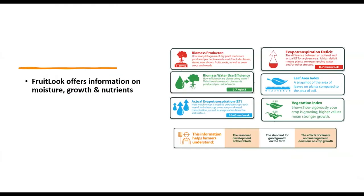Today we will be looking at the ETLOOK algorithm behind the FruitLOOK data. FruitLOOK offers users information on moisture, growth and nutrients. This information is an output of calculations made with the help of satellite data, on-the-ground meteorological data and other inputs.